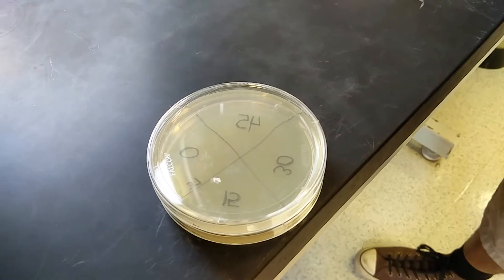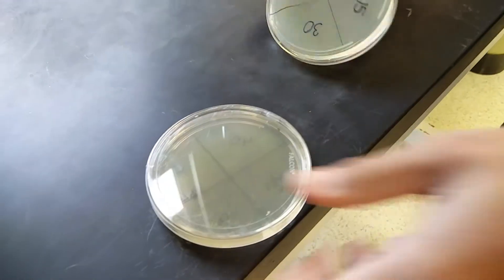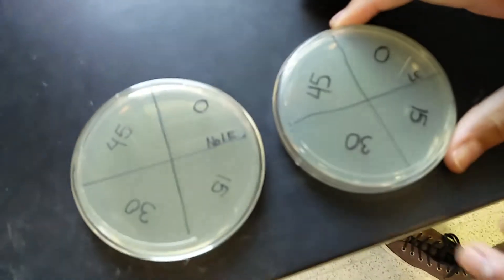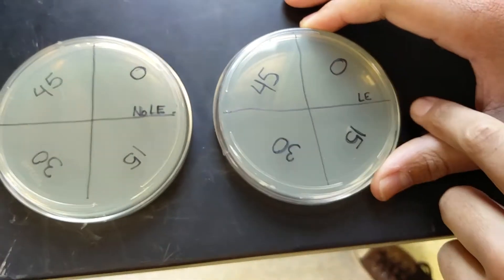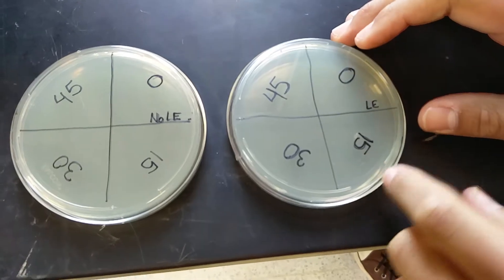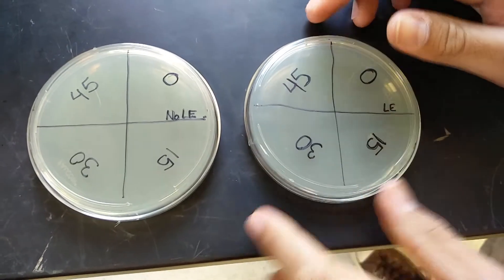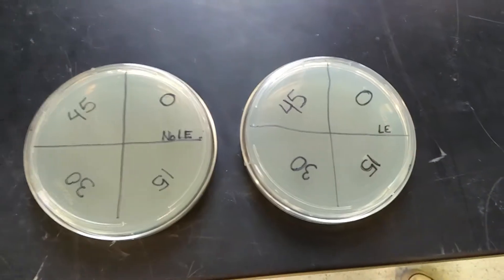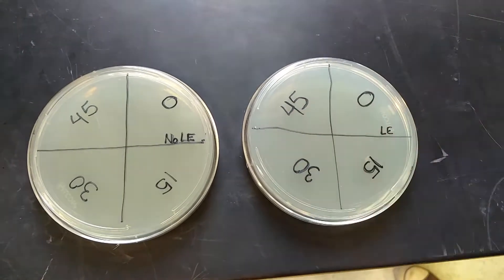First, you want to label your agro plates. As you can see I've already done this. You go on the bottom of the plate and divide it into quarters, then you write 0, 15, 30, or 45 on both of the plates. These numbers correspond to how many seconds you'll be exposing each of these sectors to the UV light.